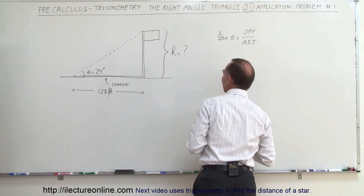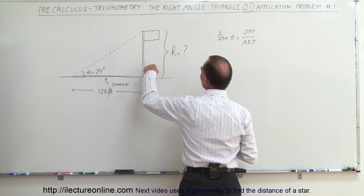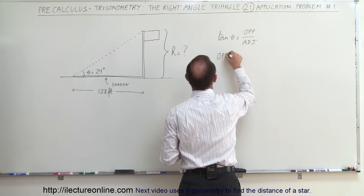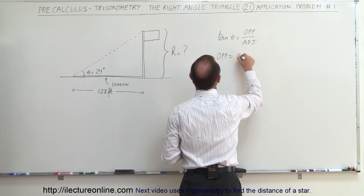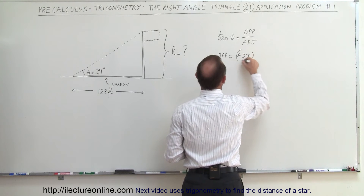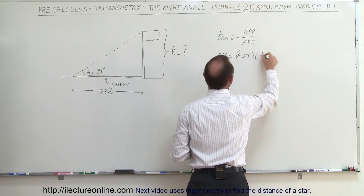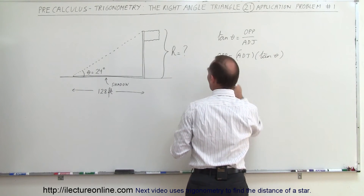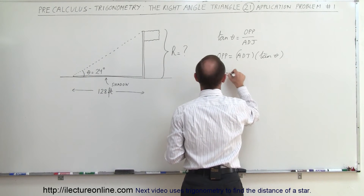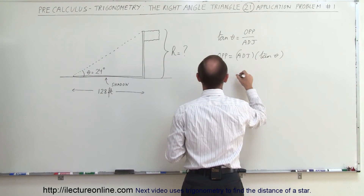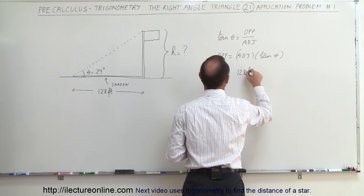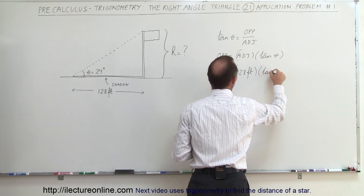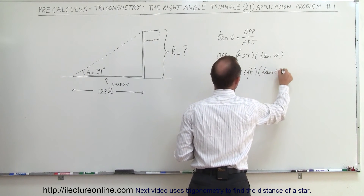In this case, we're looking for the opposite side. So we can say that the opposite side is equal to the adjacent side multiplied times the tangent of theta. The opposite side is h, the adjacent side is 128 feet, and we multiply it times the tangent of 24 degrees.